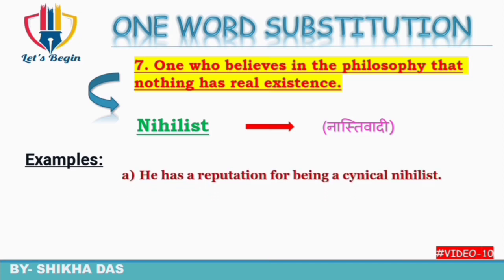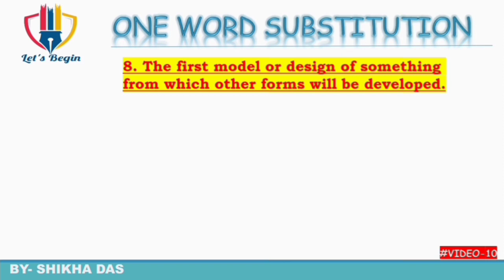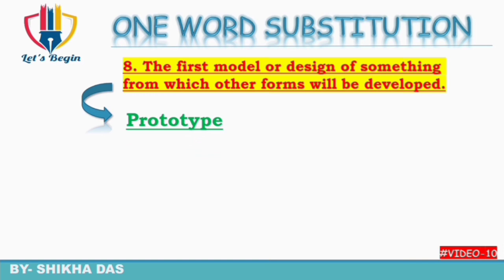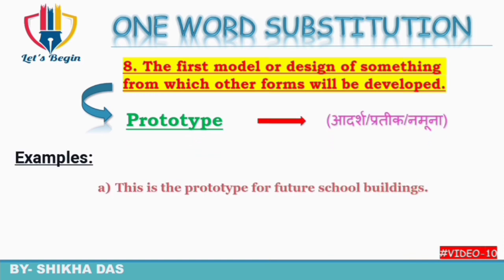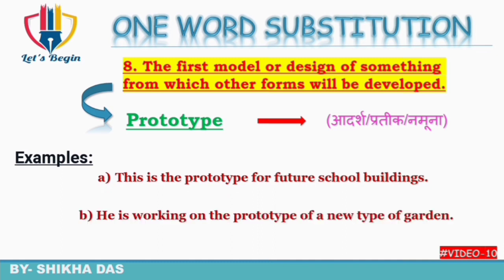Question number 8: the first model or design of something from which other forms will be developed — saare cheezon ka koi role model hota hai jisko duplicate karke uske other forms banaye jaate hain. Jo first model hota hai usko kya kaha jata hai? Usko kehte hain 'prototype'. Prototype ko Hindi mein kehte hain 'adarsh pratik' ya 'namuna'. Examples: 'This is the prototype for future school buildings.' 'He is working on the prototype of a new type of garden.'